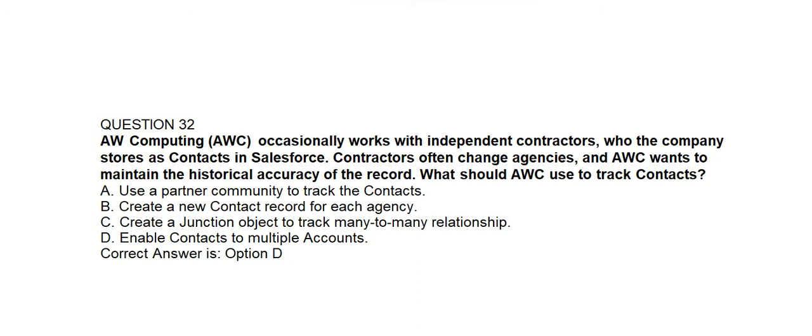Question number thirty-two. AW Computing occasionally works with independent contractors stored as contacts in Salesforce. Contractors often change agencies and AWC wants to maintain historical accuracy of the record. What should AWC use to track contacts? Option A: Use a partner community to track the contacts. Option B: Create a new contact record for each agency. Option C: Create a junction object to track a many-to-many relationship. Option D: Enable contacts to multiple accounts. Correct answer is Option D: Enable contacts to multiple accounts.